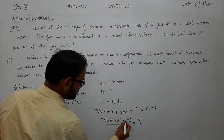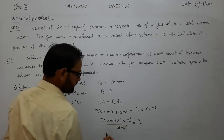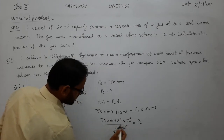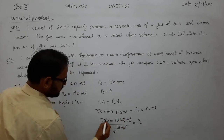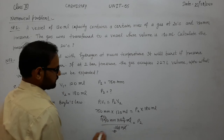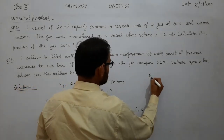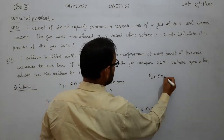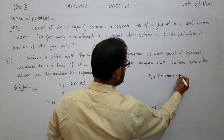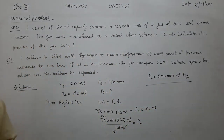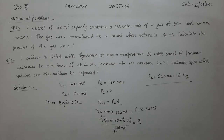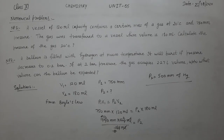The ml units cancel out, and simplifying: 750 × 120 ÷ 180 gives us P2 is equal to 500 mm of Hg. So the answer to the first numerical problem is 500 mm of Hg. Let us see the second numerical problem.